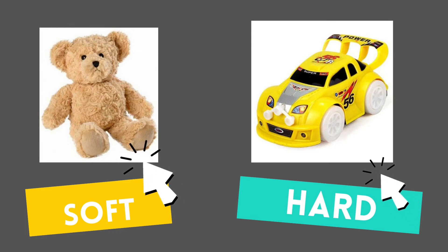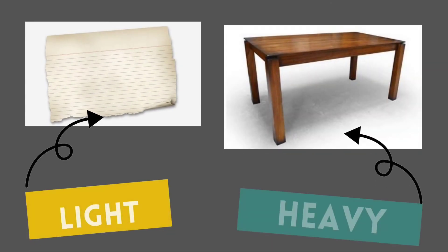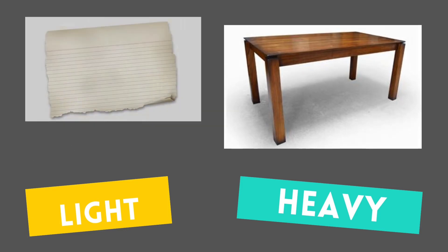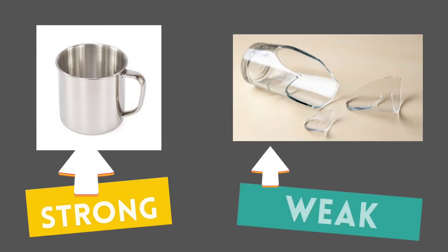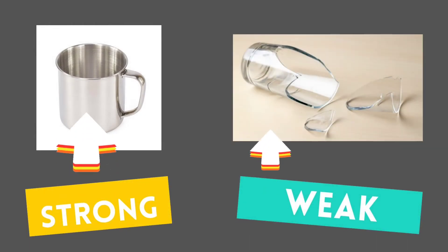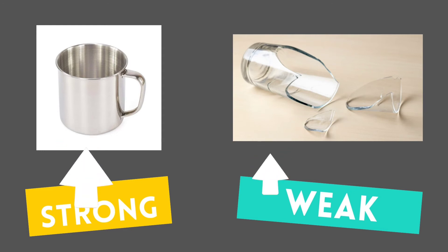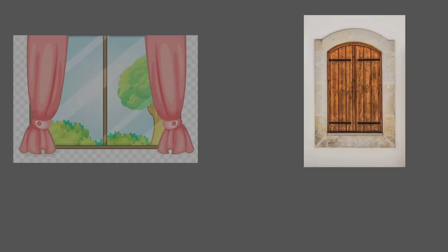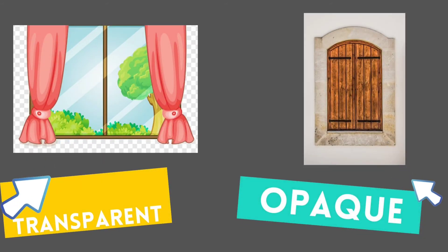Next, soft or hard — this teddy bear is soft and this toy car is hard. Next, light and heavy — this paper is light and this table is heavy. Next, strong and weak — this steel mug is strong and this glass is weak.